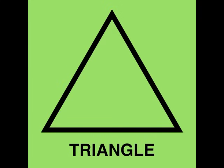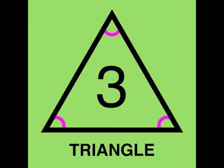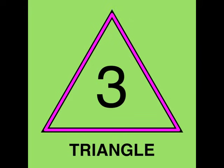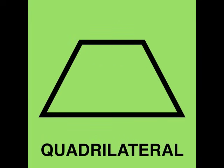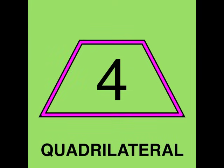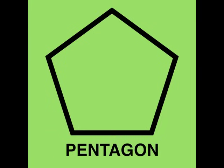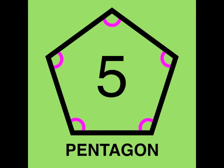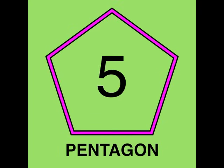A triangle is a polygon with three angles, three sides. A quadrilateral is a polygon with four angles, four sides. A pentagon is a polygon with five angles, five sides.